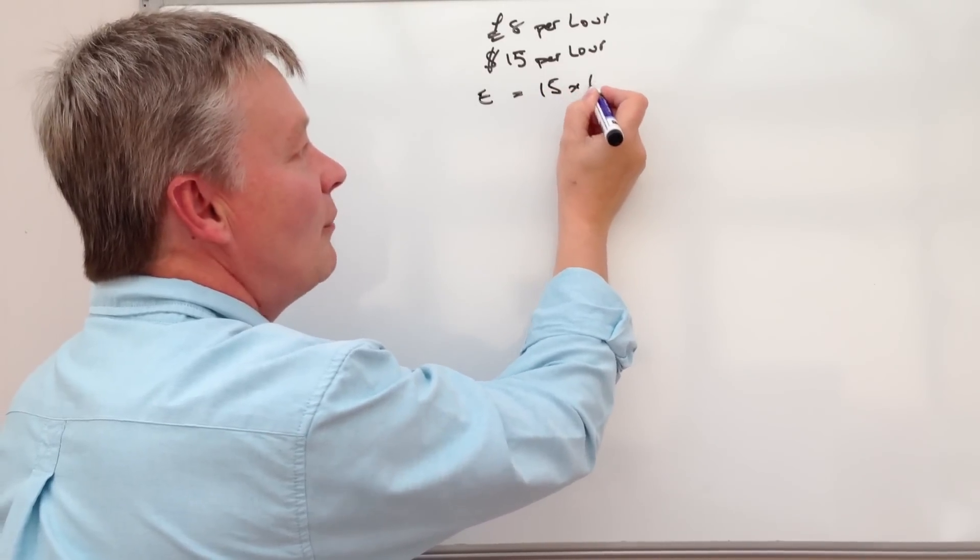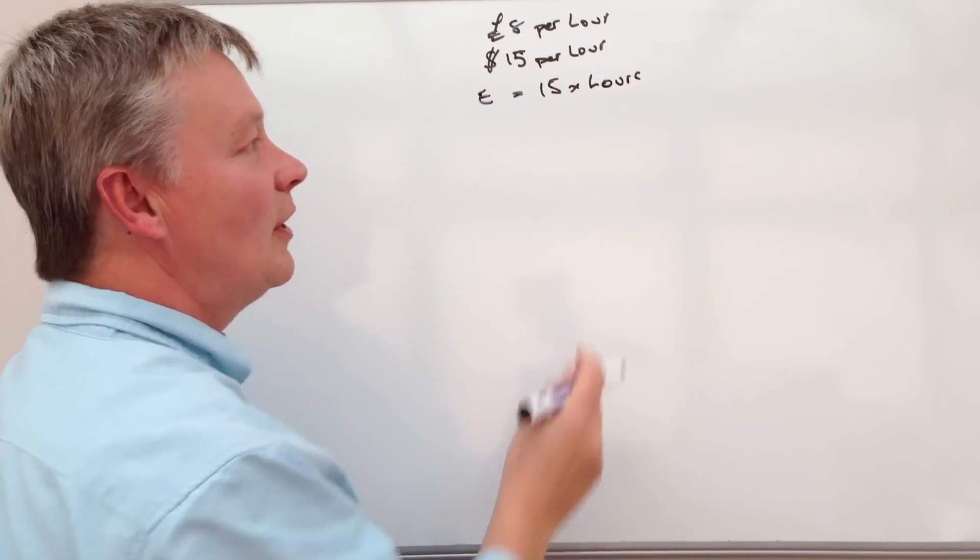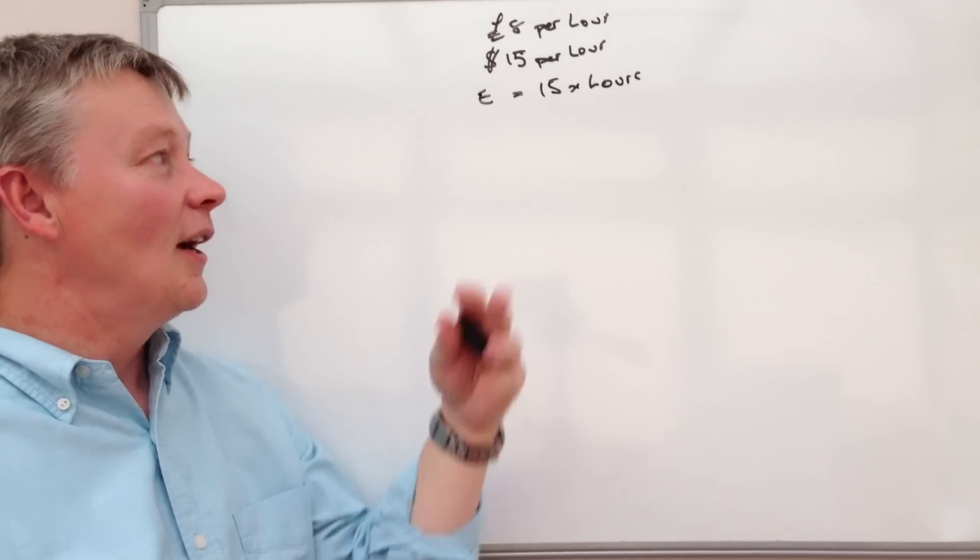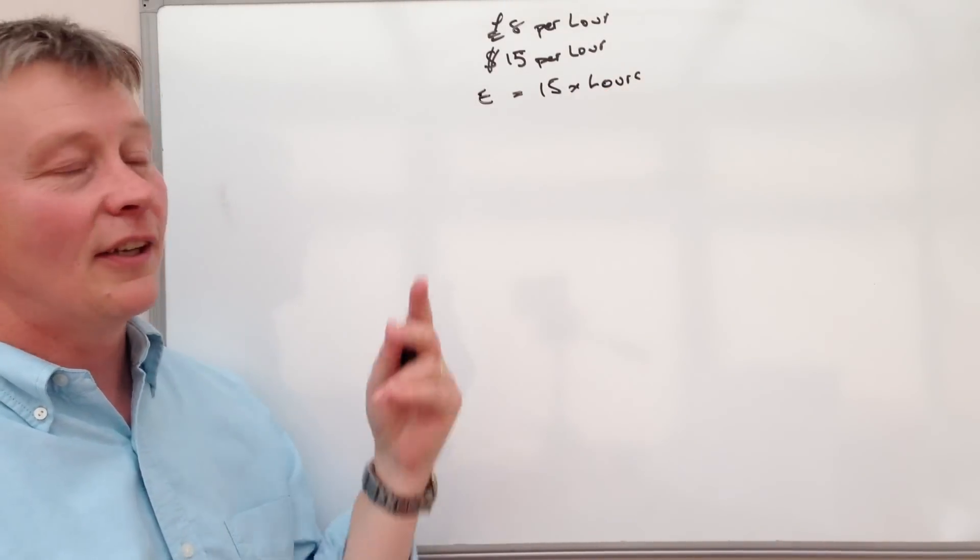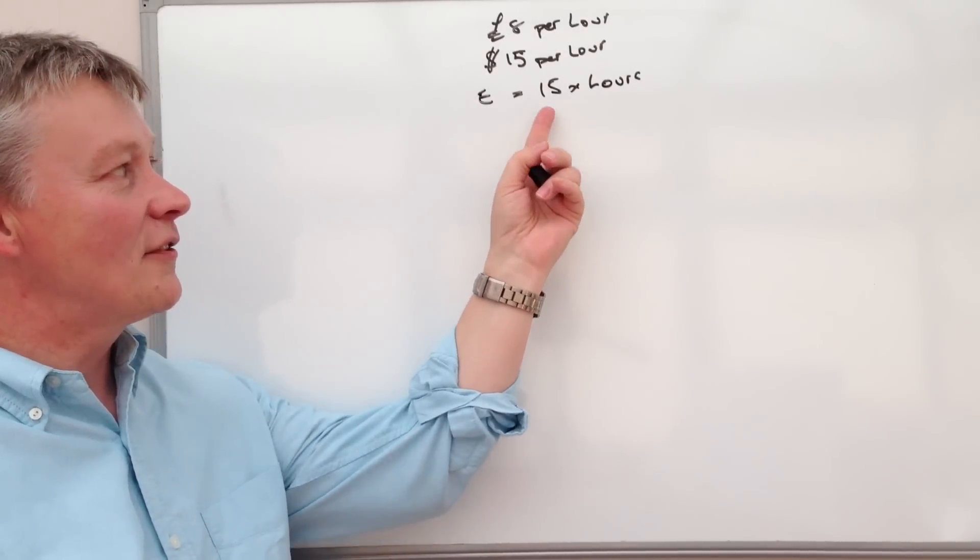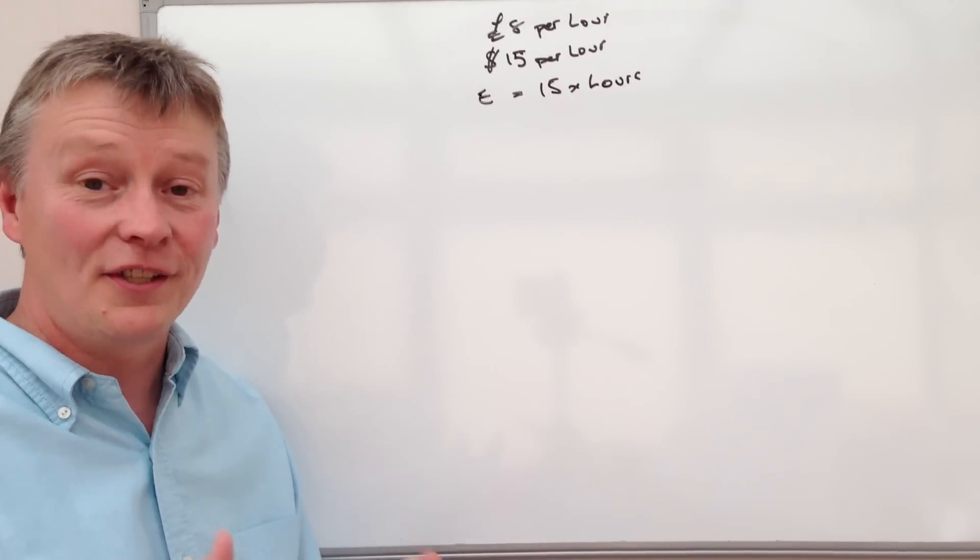$15 multiplied by the number of hours that you work. So in other words, if you work more hours you're going to earn more. If you work less hours you're going to earn less. The main thing about it is this 15 is constant, it doesn't change.